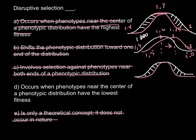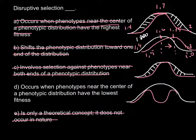Answer D: occurs when phenotypes near the center of the phenotypic distribution have the lowest fitness. Here is the model — our wave looks like this. Imagine a situation where the intermediate phenotypes have the lowest fitness. We are going to lose those intermediate phenotypes. In nature, this happens very often, because sometimes only the extremes are better fit in the environment than those in the middle.